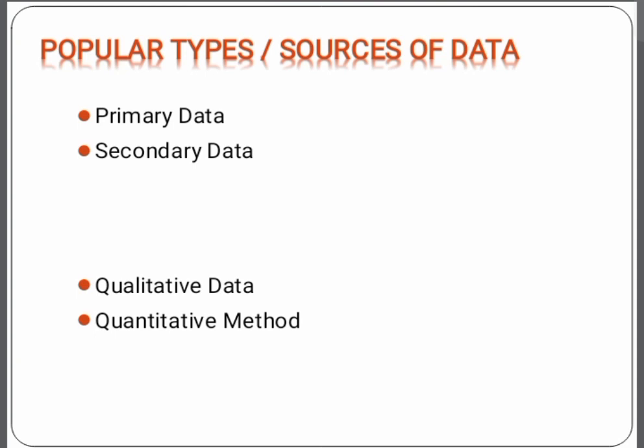Now we will discuss about the types of data — popular types or sources of data, meaning how the researcher can find the data. A researcher can find out data through two types: first is primary data and second is secondary data. Primary data is collected for the purpose of the current research project, whereas secondary data is collected for some other research purpose. It is collected fresh by the researcher and is based on survey method, observational method, and experimentation. Primary data is expensive and difficult to acquire.